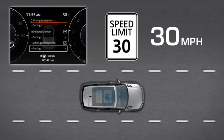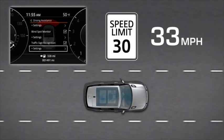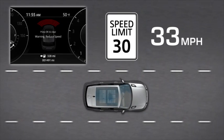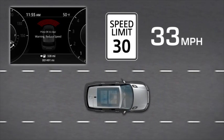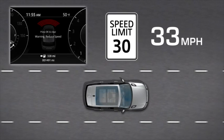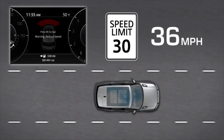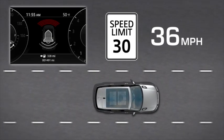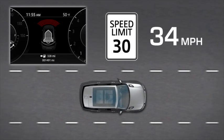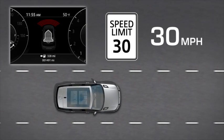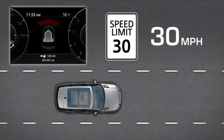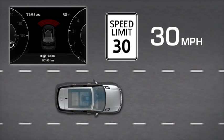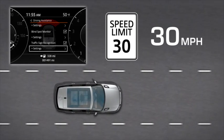If the vehicle speed rises by more than two miles per hour above the speed limit, a warning message is displayed. If the vehicle speed rises by more than five miles per hour above the detected speed limit for four seconds, a chime also sounds. The ASL detected speed limit can be adjusted if required to control the vehicle speed at just above or below the detected speed limit.